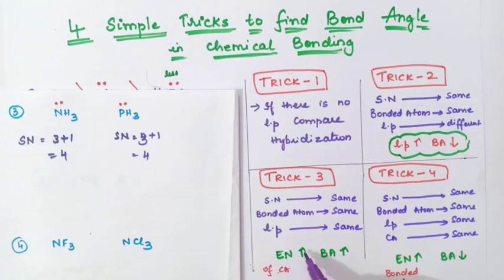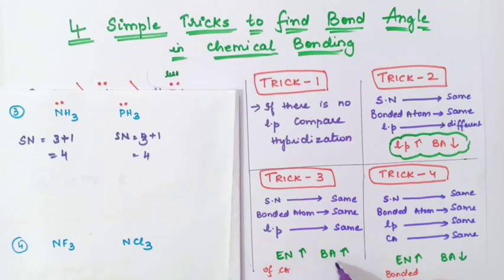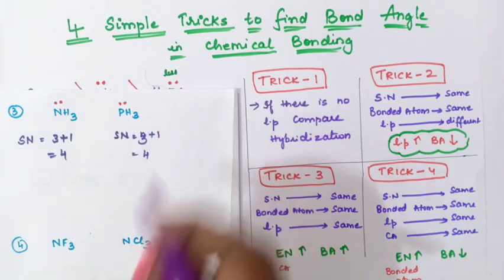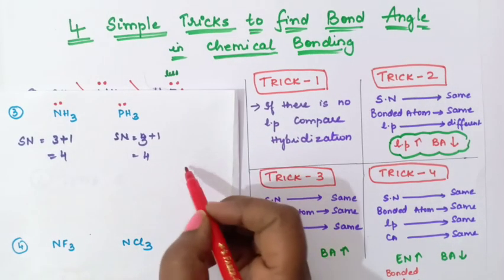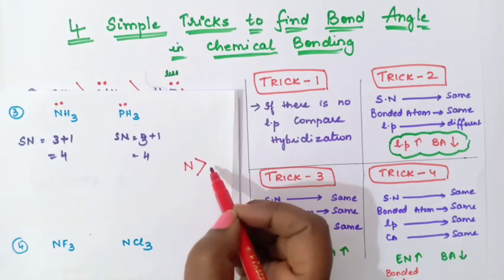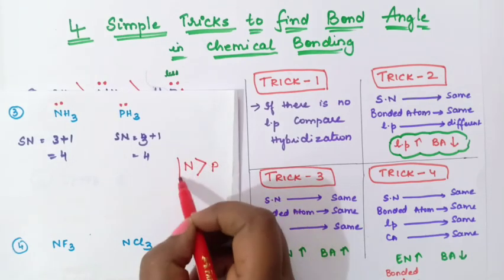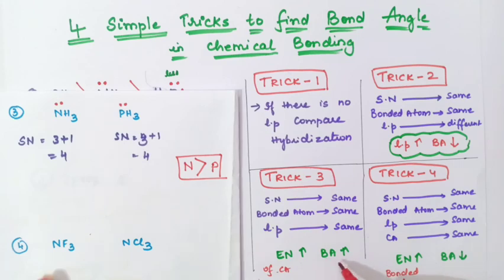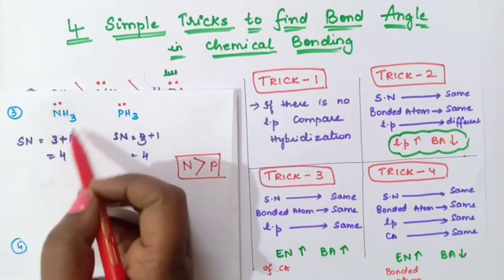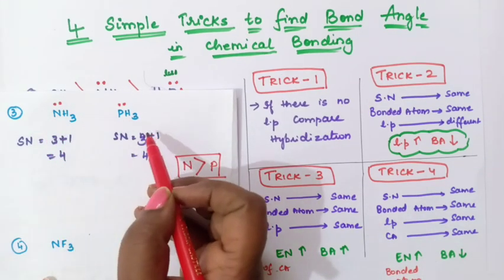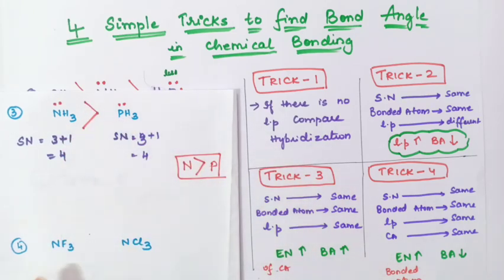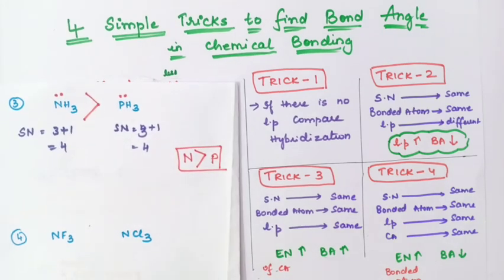So we apply Trick 3 and check electronegativity of the central atom. If electronegativity of the central atom increases, bond angle increases. Nitrogen has greater electronegativity than phosphorus. Therefore NH₃ will have a larger bond angle than PH₃. So: NH₃ > PH₃ in bond angle.